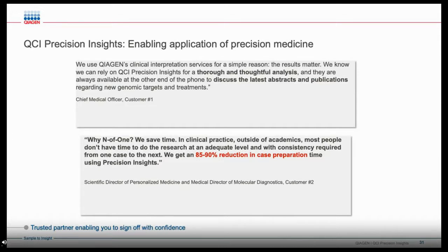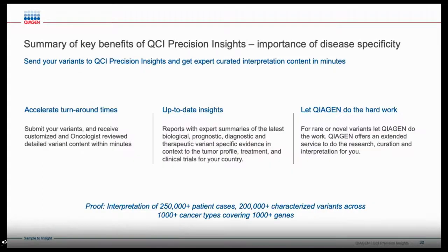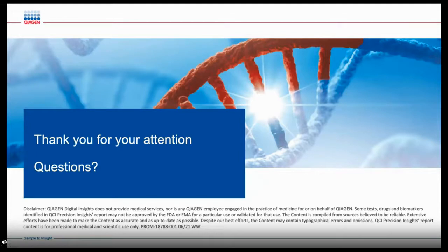The whole process is platform-agnostic and secure, and the XML report allows the customer maximum flexibility to design their own report. Precision Insights customers save time and receive reliable results. One customer trusts Kyagen for thorough and thoughtful analysis, as well as availability to discuss the science in the event of any questions. Another customer has found the reports to be reliable and consistent, allowing them to save 85 to 90 percent of the time they had been spending on case preparation. In conclusion, QCI Precision Insights provides expert-curated variant and disease-specific interpretation, saving time and providing up-to-date, reliable, and consistent information.